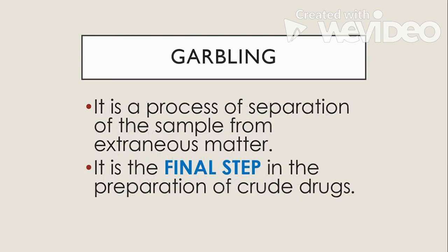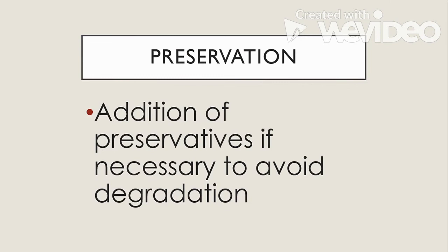Next is garbling. It is a process of separation of the sample from extraneous matter. Take note, it is the final step in the preparation of crude drugs. We also have preservation — it is when we add preservatives, if necessary, to avoid degradation of the substance. Degradation is the condition wherein the substance may result in lower quality.